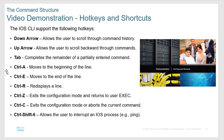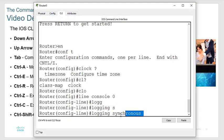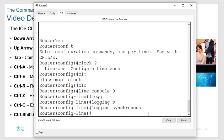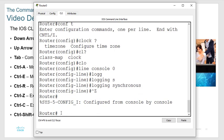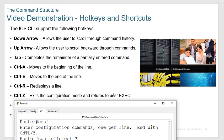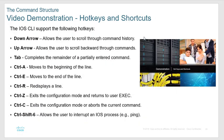There are keyboard shortcuts: the up and down arrows repeat commands you've typed in, and the router remembers the last 10 commands entered — you can change that to remember up to 50. Tab completes the remainder of a command. Control-A moves to the beginning of the line, Control-E to the end, Control-R re-displays the line, and Control-Z returns you to privileged mode. Note that the Cisco slides say Control-Z returns you to user exec mode — that is not correct. Control-Z takes you to privileged mode, not user mode.